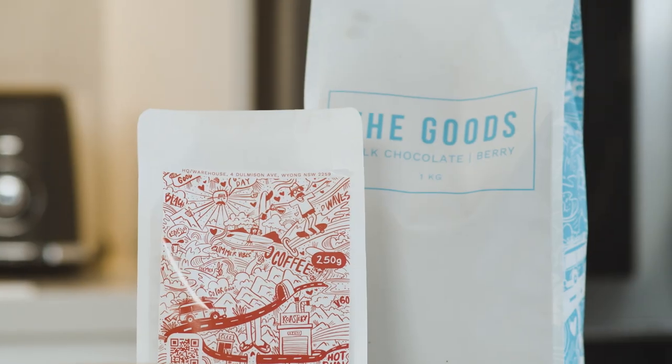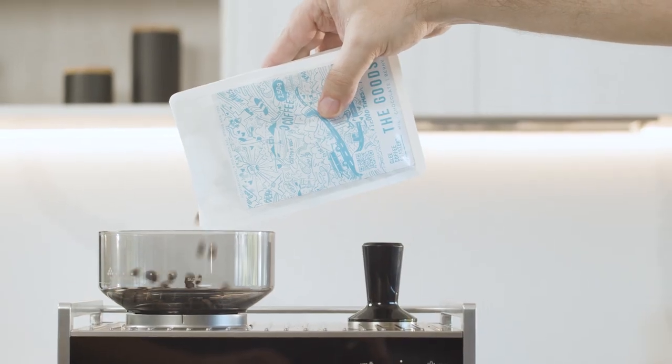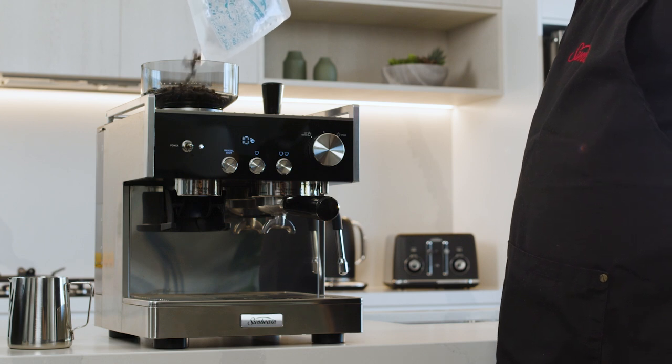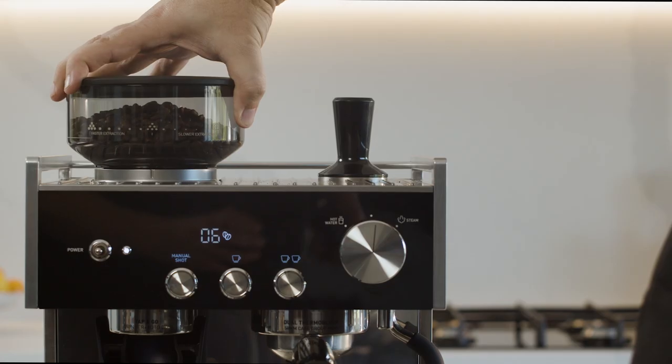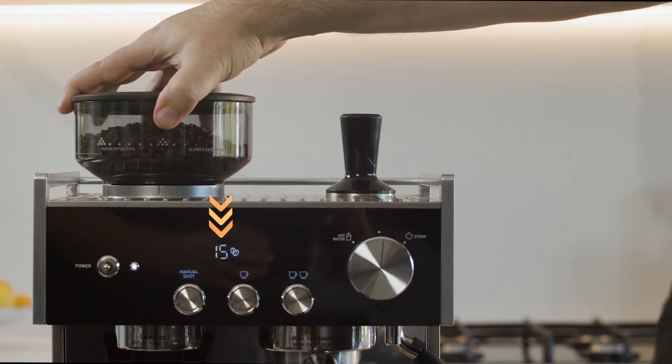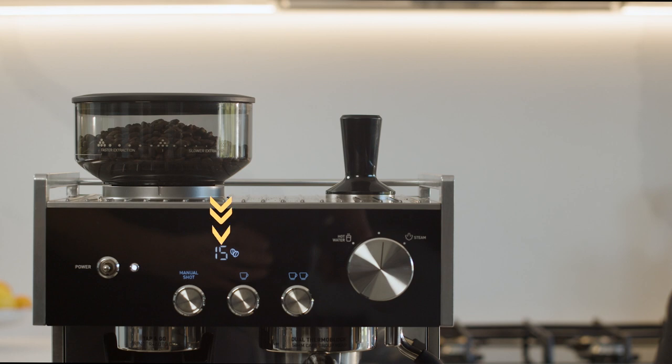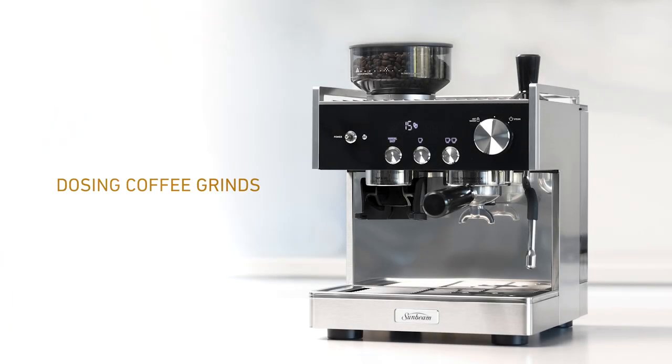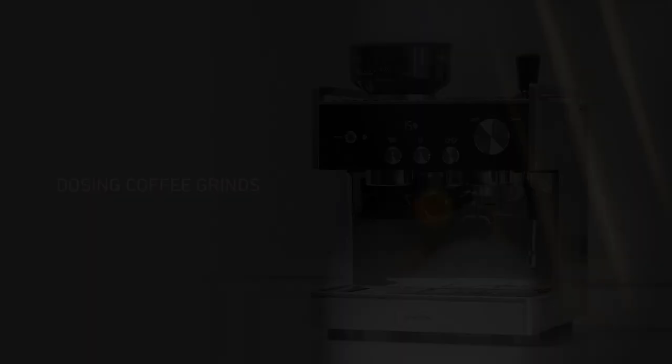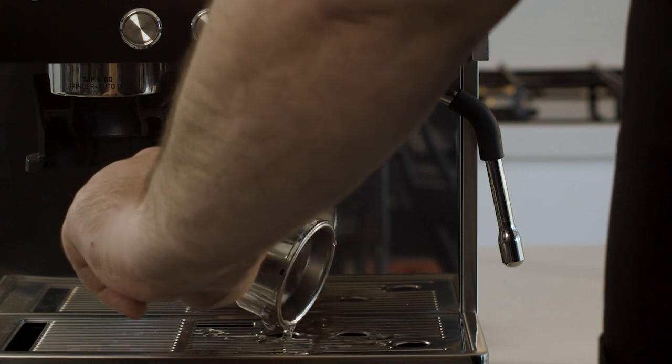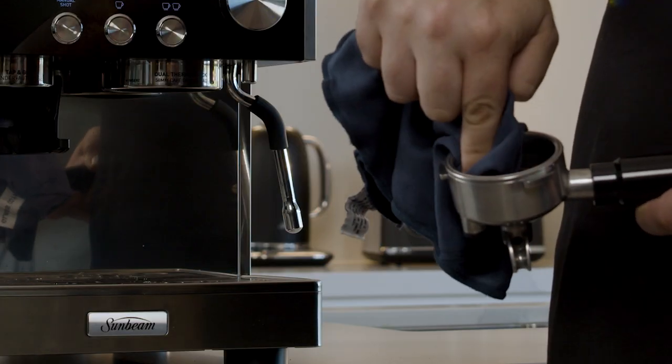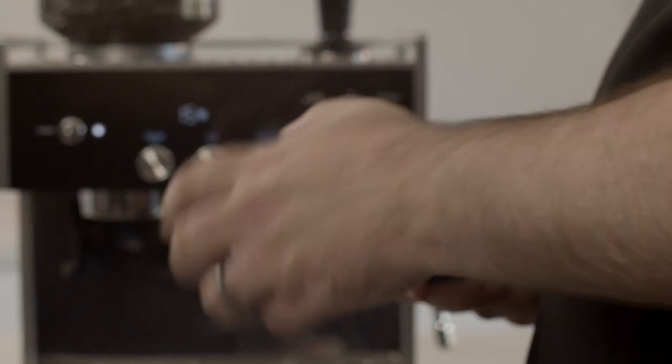We recommend using cafe quality beans from your local roaster for the best coffee results at home. Add the beans into the hopper. A good starting point for your grind size is 15. Turn the hopper until the grind size on the screen displays 15. Dry the group handle to ensure the ground coffee is being dosed into a dry filter basket.